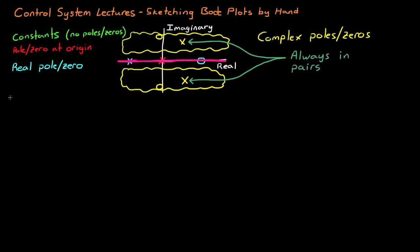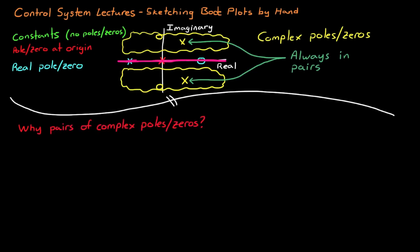So why a pair and not a single complex pole or zero? Well, I'm glad you asked. Let me explain it this way. A transfer function with a single complex pole might look something like this: 1 over s plus j. And this function has a single pole at s equals minus j. And mathematically, this is a perfectly legitimate transfer function.